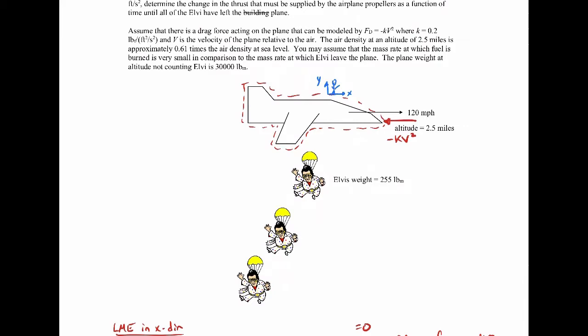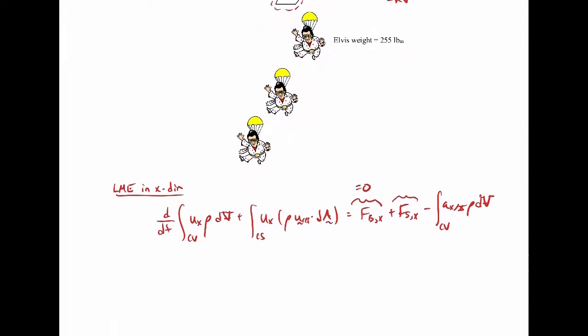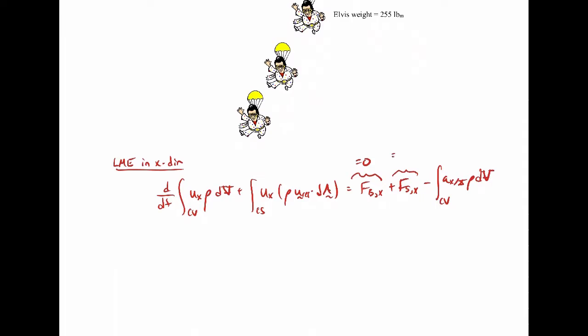We also have the thrust that the engines exert to keep the aircraft moving along. It's actually a momentum flux, but we can think of it here as a force. We're going to have the thrust plus a delta T for the thrust because we're trying to find the additional thrust we have to apply to accelerate the aircraft. At steady conditions, the thrust will equal minus kv squared, so we're just finding the little extra bit of thrust. Our surface forces will be T plus delta T acting in the positive x direction, minus kv squared acting in the negative x direction.